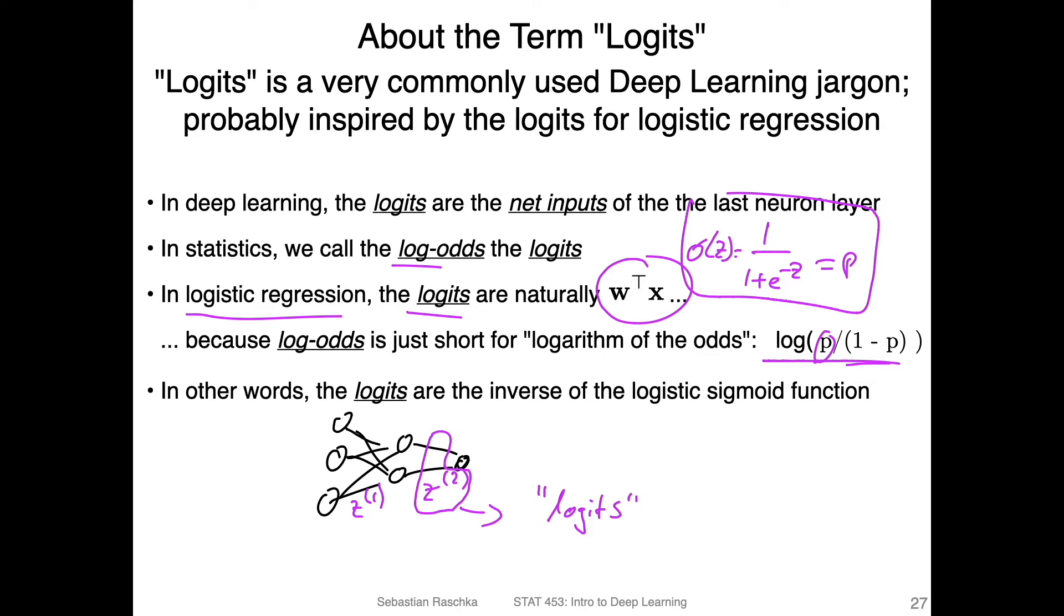Here I just abbreviated it as p. So the log of p over one minus p—this function is the inverse of this function. In deep learning, though, there's not necessarily any relationship between the log-odds and the net inputs of the last layer. I think the term is derived from logistic regression; people call that logistic logits in the context of logistic regression, and then just generalize this wording to arbitrary multi-layer perceptrons where we may not even have a sigmoid function, as we will see later. So you can just think of it as the net inputs of the last layer, basically.